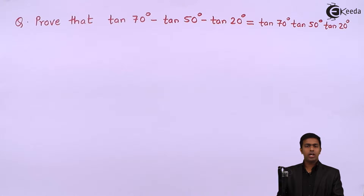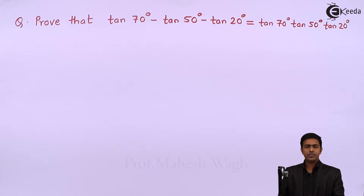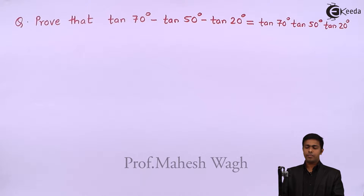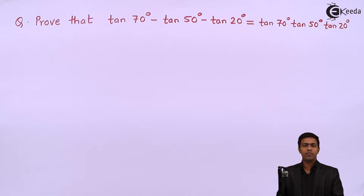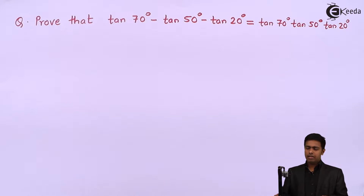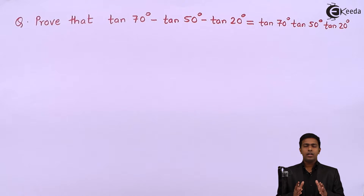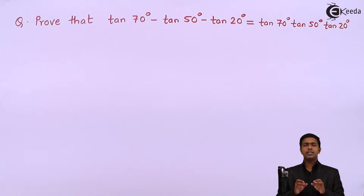Hello friends. In this video we have to prove that tan 70° minus tan 50° minus tan 20° is equal to tan 70° into tan 50° into tan 20°. This is a problem where both sides have the same trigonometric function, which is tan.